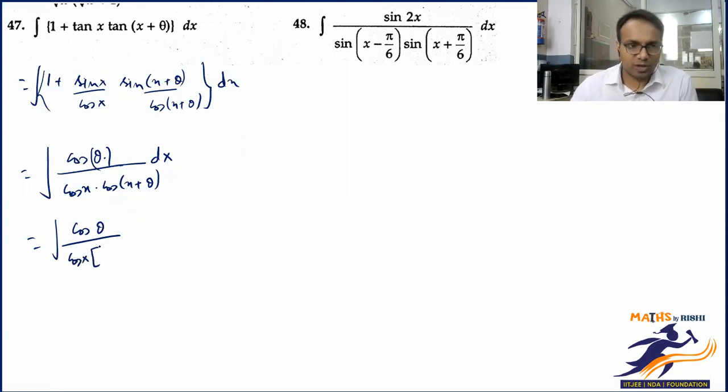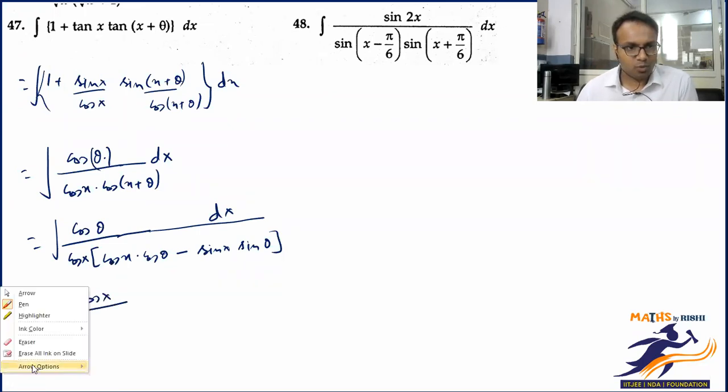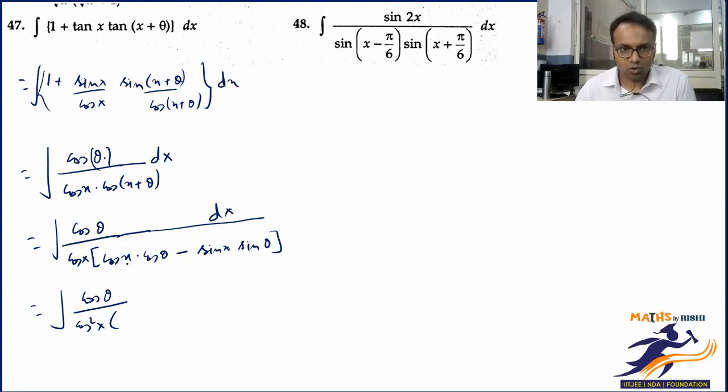If I open this, yeh to cos x hai. Second wala dekhte hai kya nikal raha hai. Yaha mere paas cos θ hai, usse koi tension nahi because that is a constant. This cos x is already in its most simplified form. Yaha pere main dekhta hoon to yeh mujhe dikhta hai cos x cos θ minus sin x sin θ. Yaha se thoda achha lagna start hota hai.